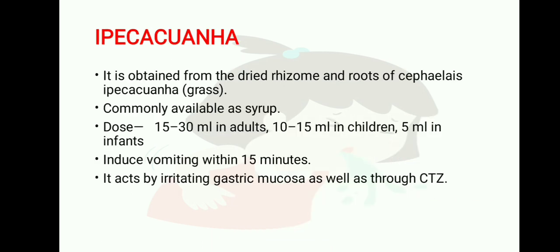Third is ipecacuanha. It is obtained from the dried rhizomes and roots of Cephaelis ipecacuanha — basically a plant. Commonly available as a syrup. Dose is 15 to 30 ml in adults, 10 to 15 ml in children, and 5 ml in infants. It induces vomiting within 15 minutes after administration. It acts by irritating the gastric mucosa as well as through the CTZ.